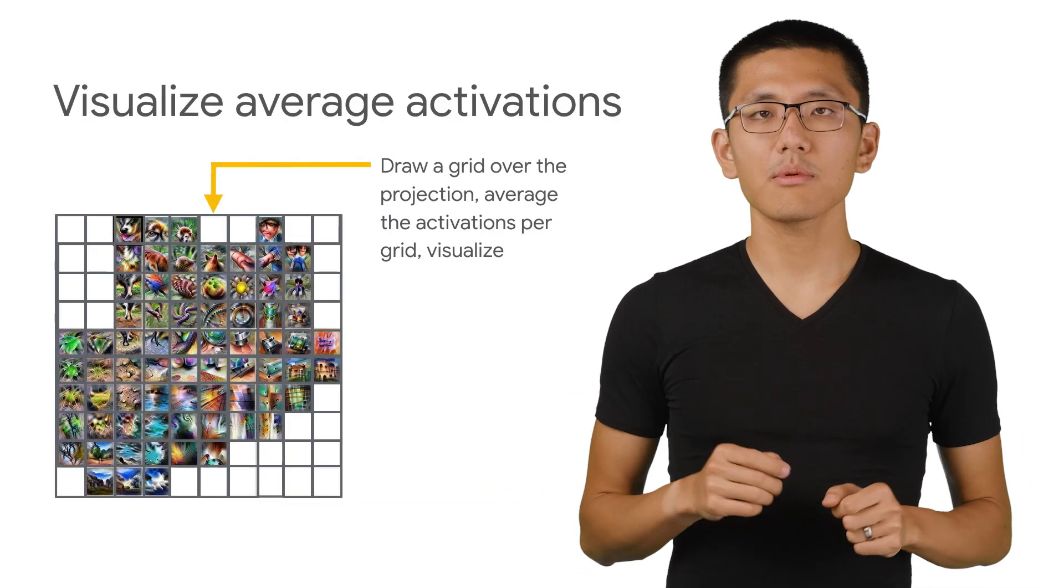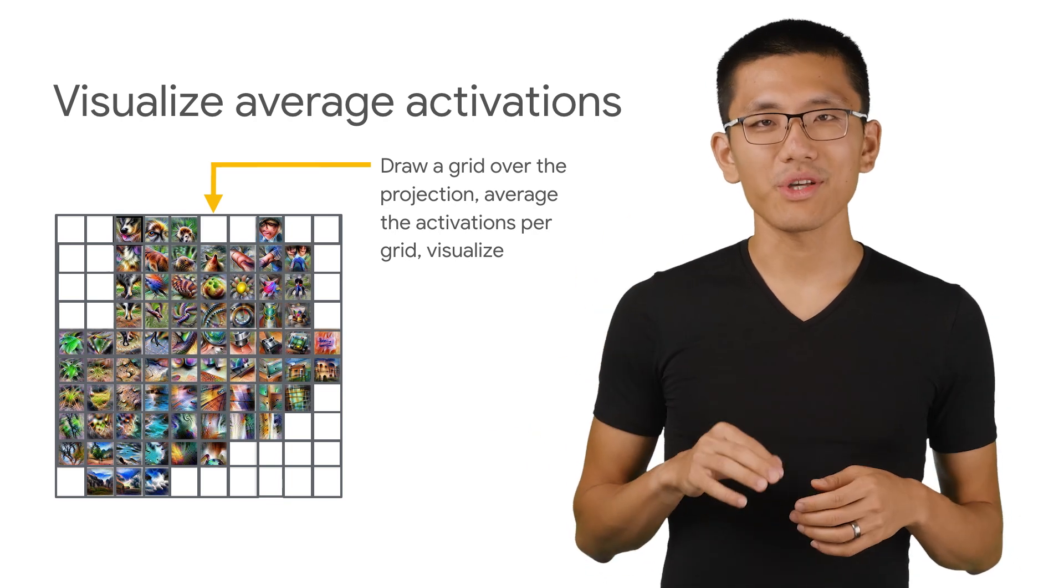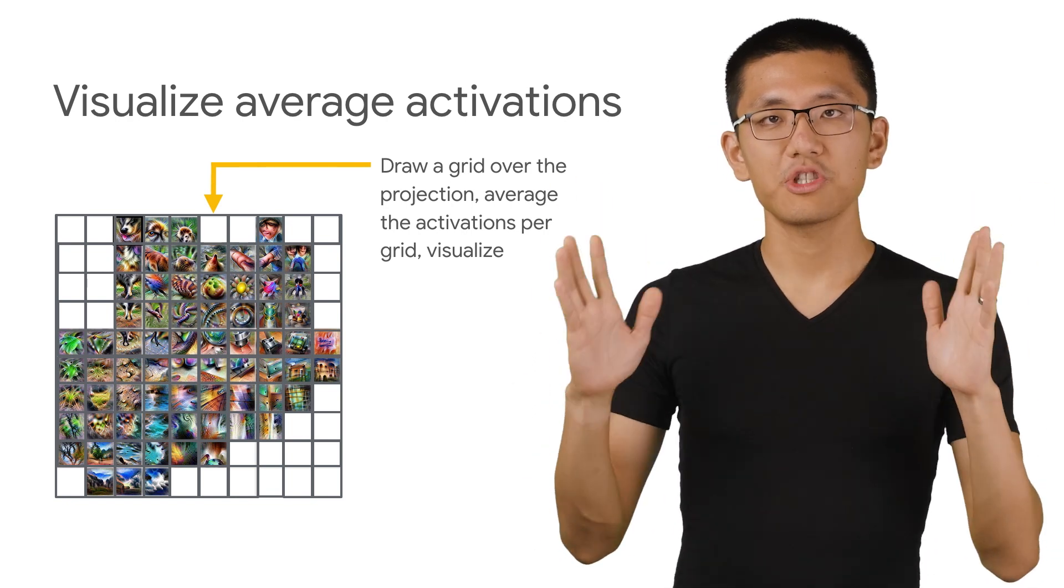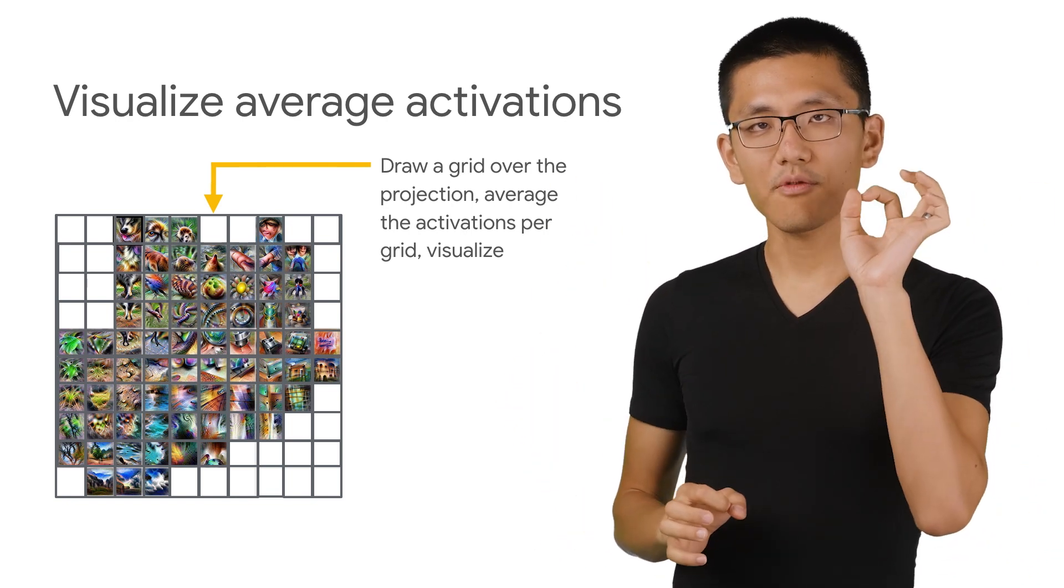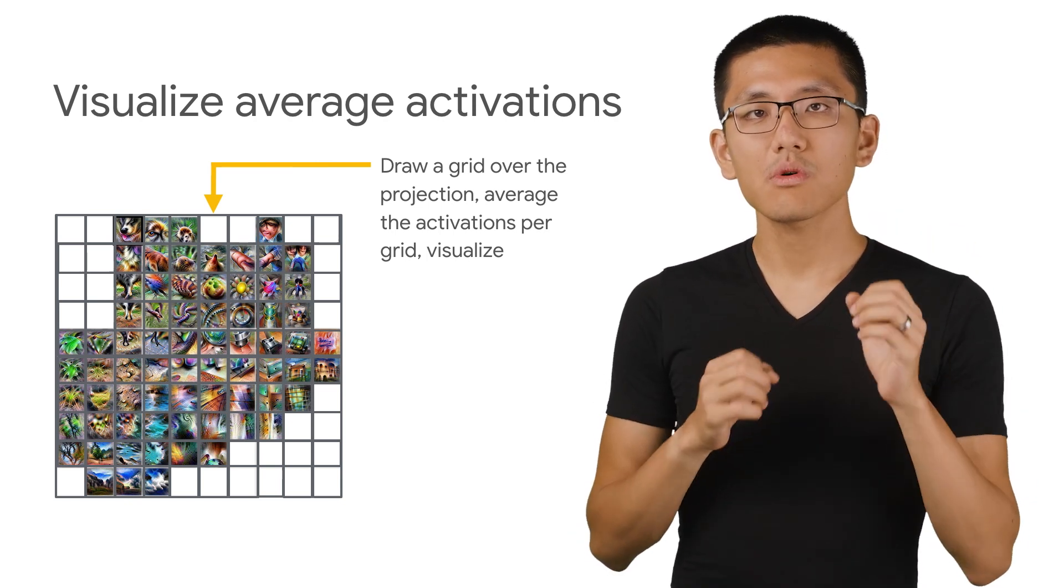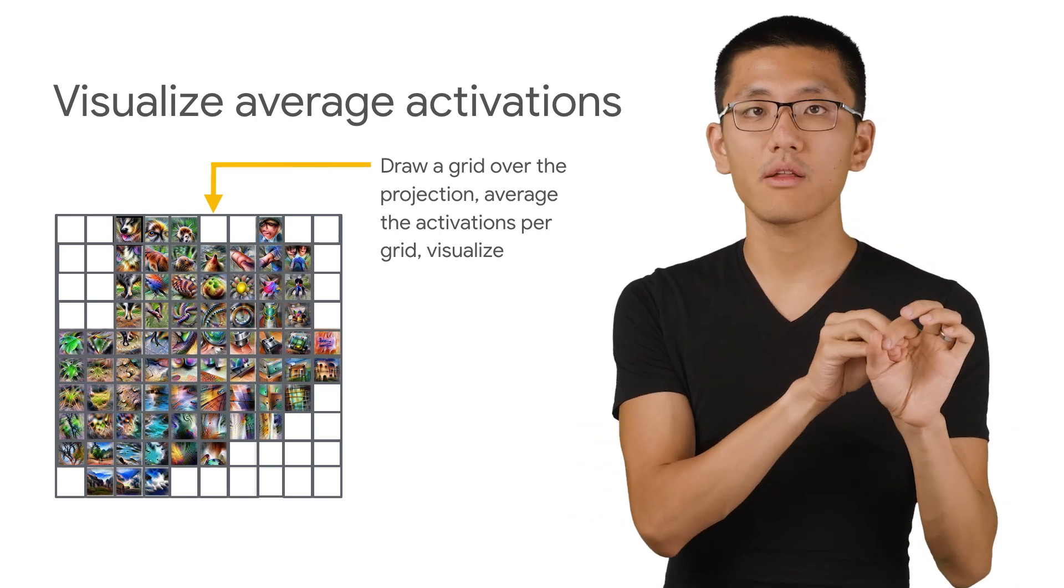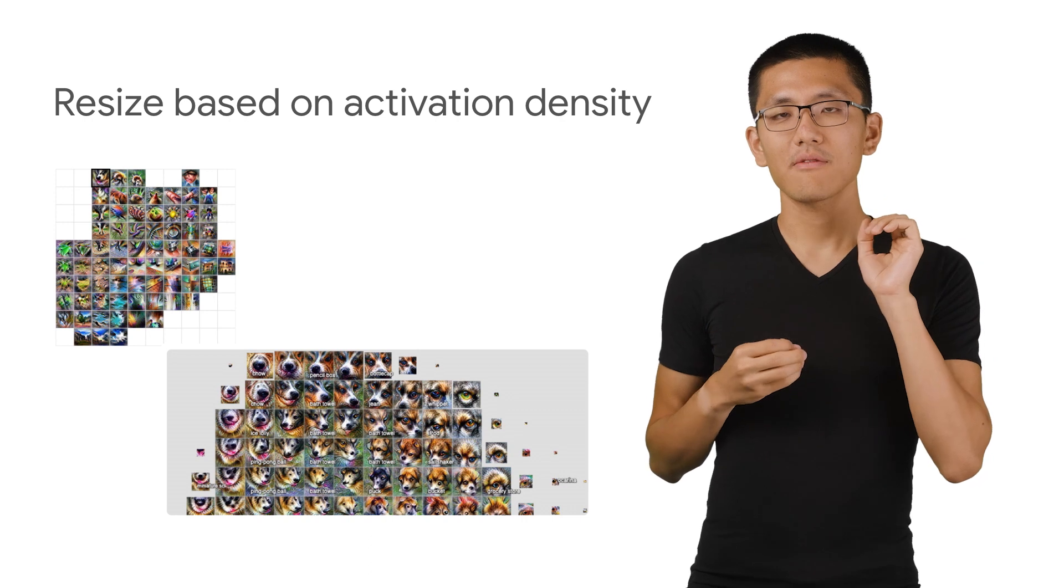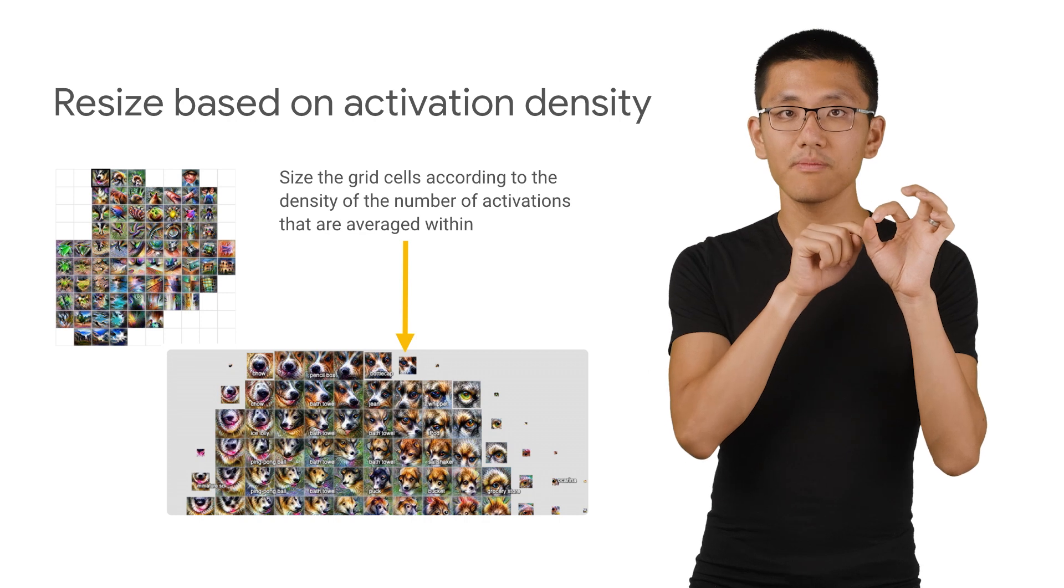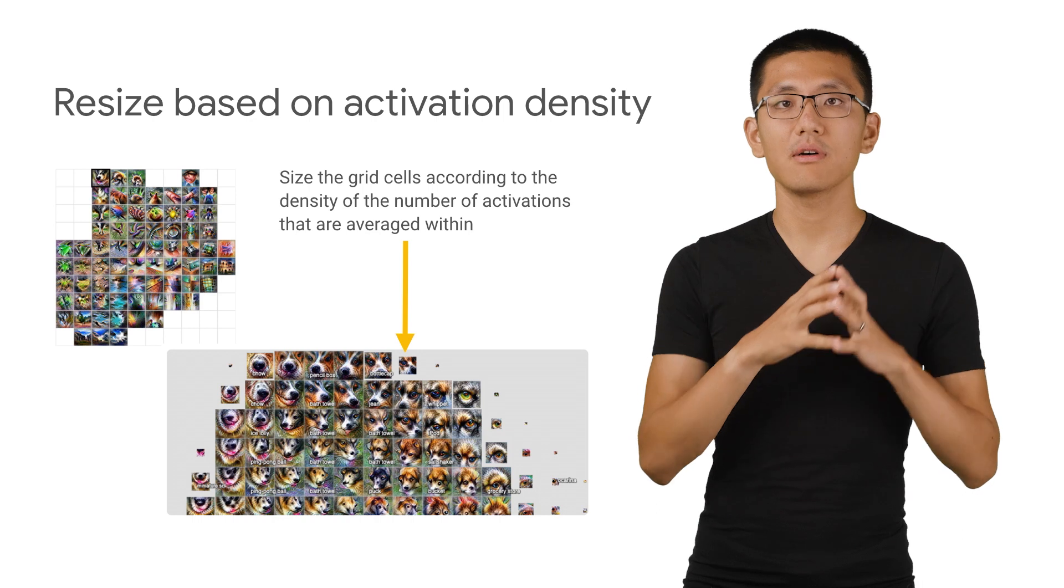But there's still the problem having just millions of activations to deal with, right? So that's rather unwieldy for visualizing. So let's draw a grid over the whole 2D projection. And we'll take, for each grid, the average of the activations within it. This won't cause us to lose too much detail since activations that are close together are similar to one another. So now we can finally resize each grid based on the number of activations on that grid, giving us a sense of how strongly the network responds to that particular type of input.